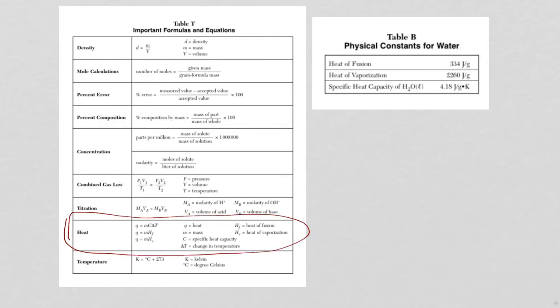Here are the heat equations here at the bottom. Q means heat, M means mass, C specific heat capacity, and delta T is change in temperature. Heat of fusion and heat of vaporization we'll get to in another question.